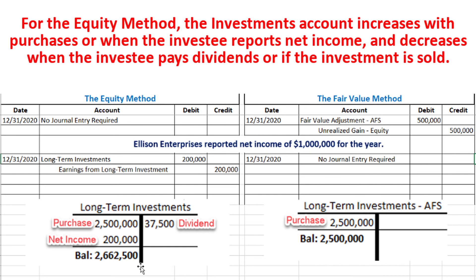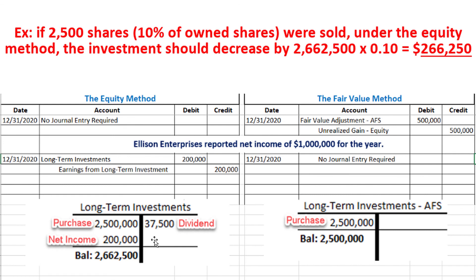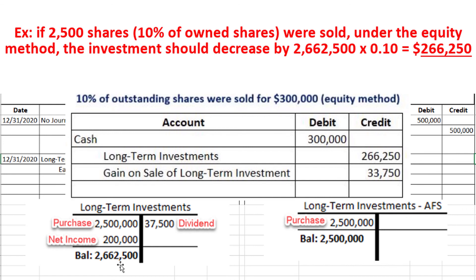You have to be careful with a sale of long-term investments under the equity method. For example, if 2,500 shares were sold — 10 percent of the original 25,000 — the long-term investments account should decrease by 10 percent of the balance, which is 266,250 dollars. Assuming the shares were sold for 300,000 dollars, we debit cash for 300,000, credit long-term investments for 266,250, and credit gain on sale of long-term investments for the difference of 33,750 dollars.